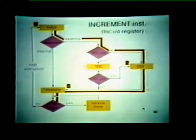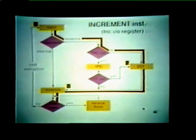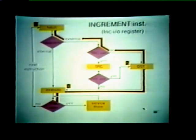In this example, the processor has retrieved an increment instruction, and the value to be incremented is stored in an IO register. The operand is external to the processor, so we must first branch to retrieve it. There is no source operand — the IO register is treated as the destination — so we branch directly to the destination state. Once the destination operand is retrieved, we proceed to the execute state and increment the operand. This instruction uses three ROM states: fetch, destination, and execute.